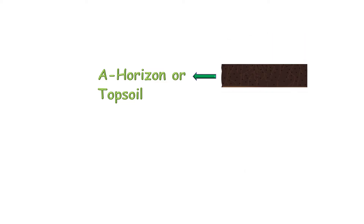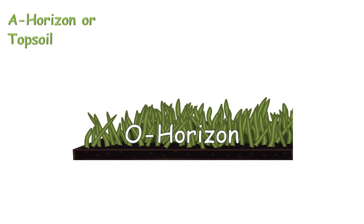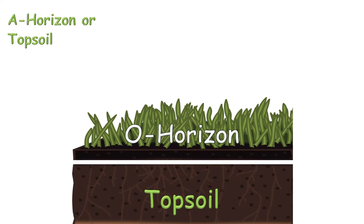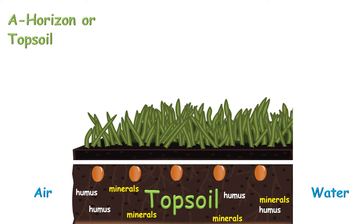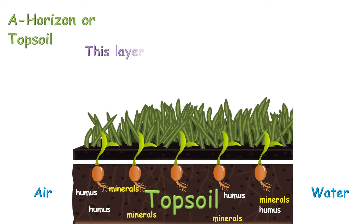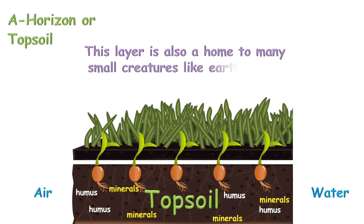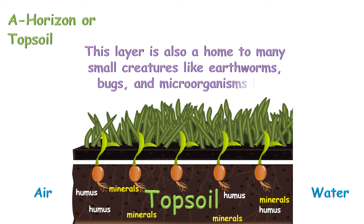A horizon, or topsoil, is below O horizon. This is the layer where we sow seeds. It is rich in humus and minerals, and the soil in this layer is soft and porous, so it can hold enough air and water. These conditions help seeds to germinate and grow into new plants. This layer is also home to many small creatures like earthworms, bugs, and microorganisms like bacteria and fungi.